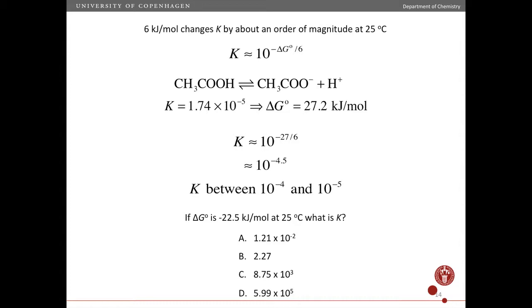Okay so let's use this as an example. If here we have an equilibrium reaction the equilibrium constant has been measured to be 1.74 times 10 to the minus fifth and if you plug in the exact numbers that corresponds to a delta G standard of 27.2 kilojoules per mole.